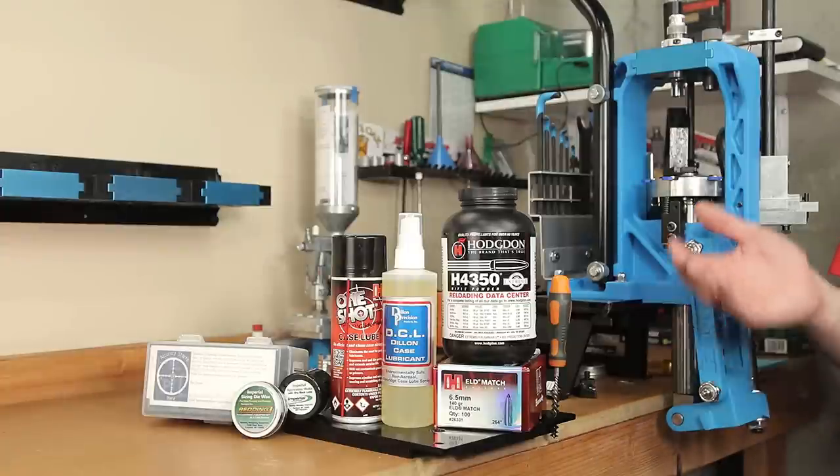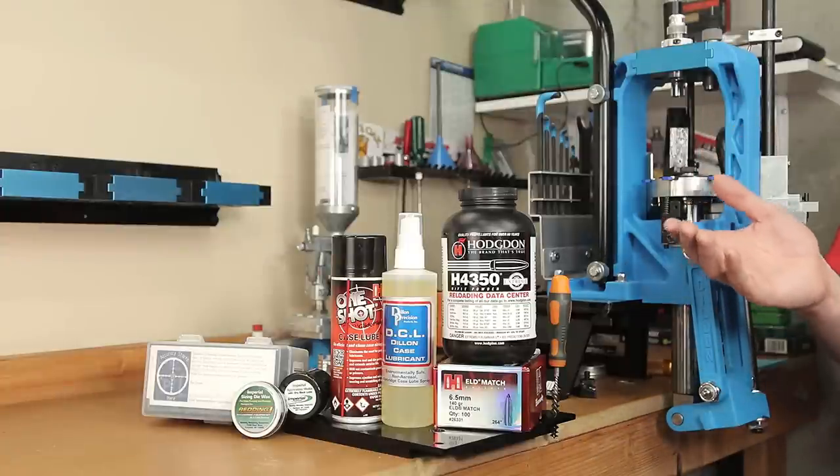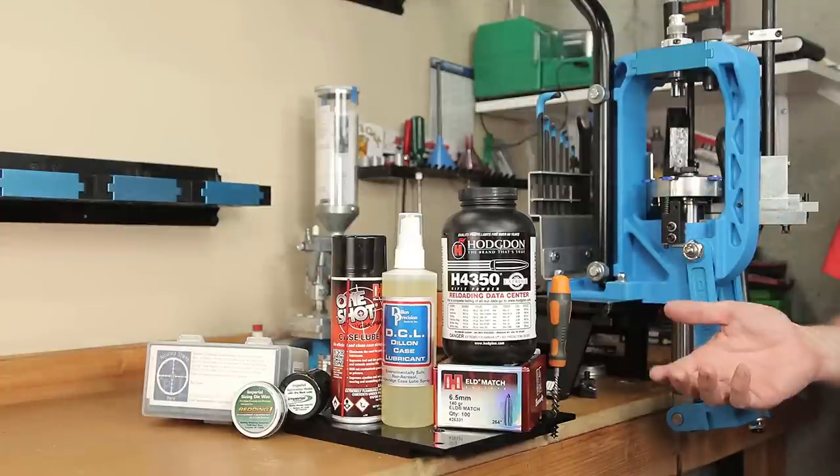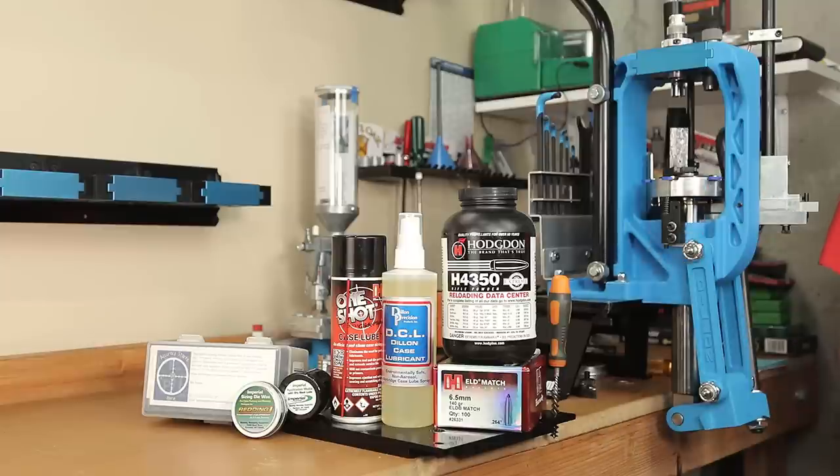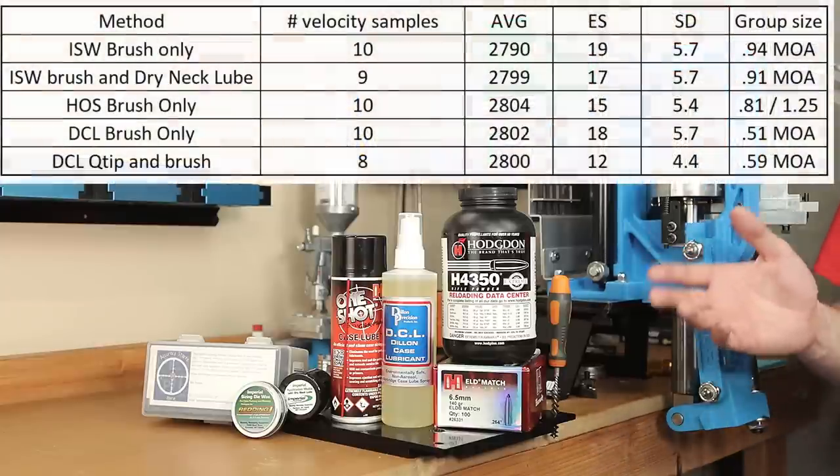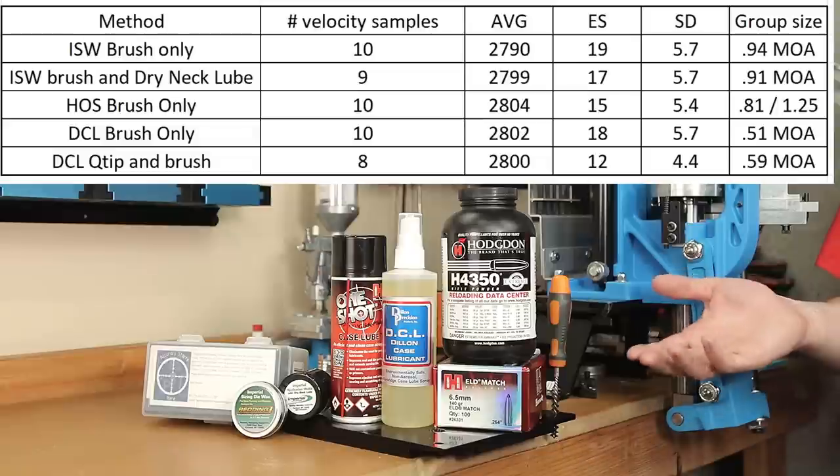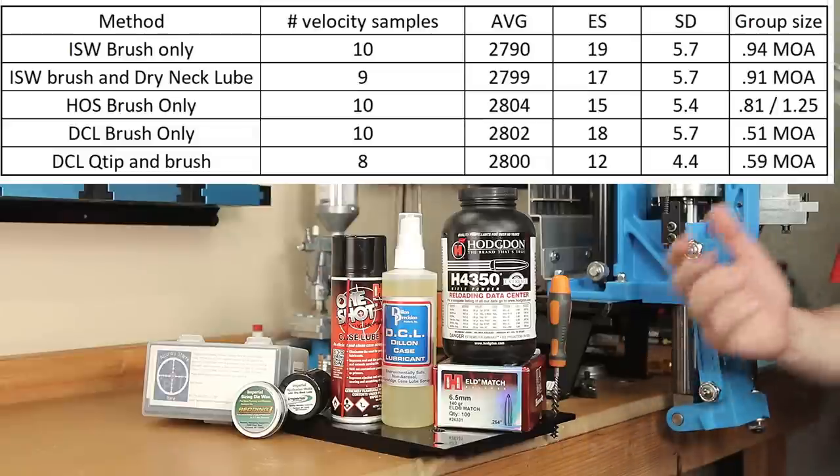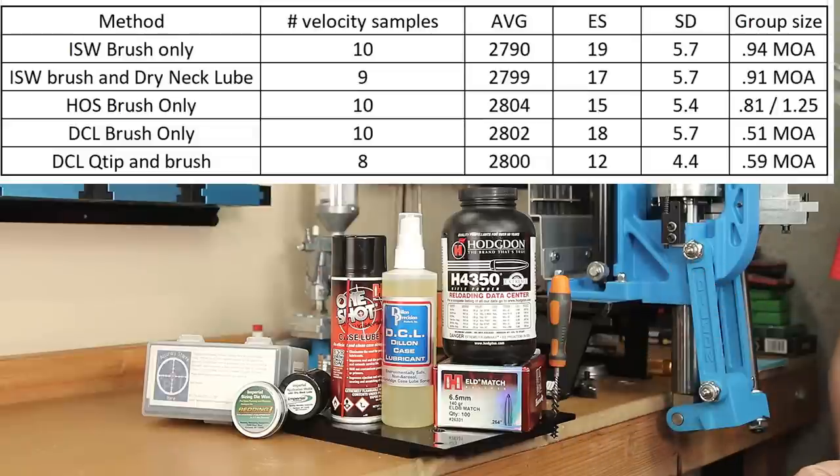I don't want you to think conclusively that the case lube we're using has anything necessarily to do with the group size. Which case lube is best? I'll leave that for you guys to decide. Overall, as far as the statistics were concerned, I don't really think there's a significant difference. But I guess it leaves some of you guys something to argue about in the comments section below.